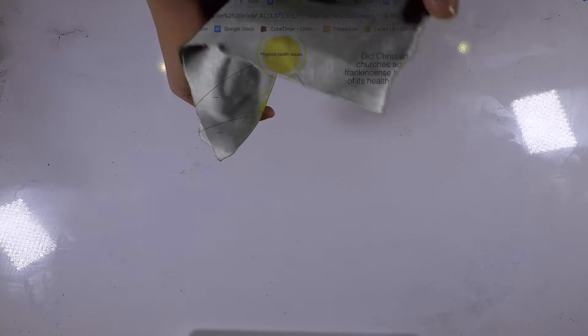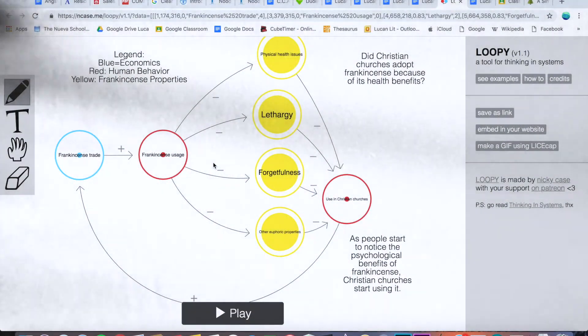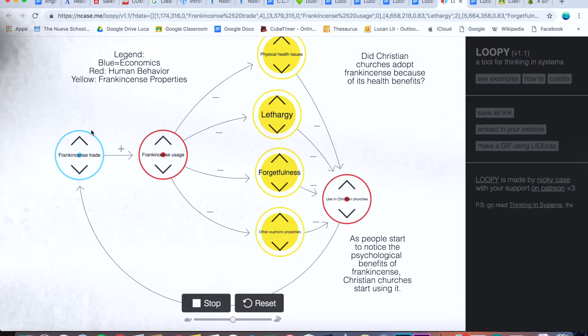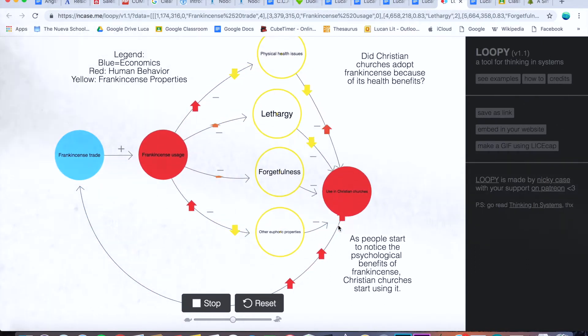Here's a loopy showing how frankincense could have been adopted by Christians. Loopy is an online tool that you can use to show systems and how different nodes or parts of a system can interact with each other. As frankincense trade increases over time, frankincense use also increases, decreasing health issues such as forgetfulness, lethargy, and physical health problems. As more churches notice this, the more it is used in Christian ceremonies. The more churches that use and buy frankincense, the more frankincense is produced, processed, and traded, starting the cycle over again.